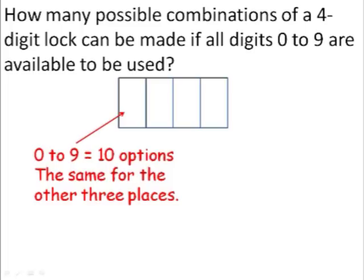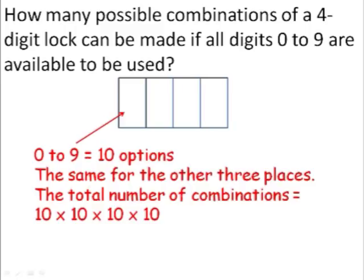Similarly, for the remaining 3 places, we have the same 10 choices available. It means the total number of combinations are 10 times 10 times 10 times 10, which gives you 10,000. So we can make 10,000 different combinations for this lock.